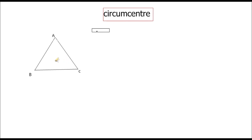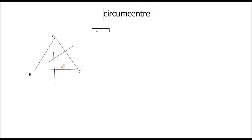Circumcenter is the point of intersection of perpendicular bisectors of the three sides. A perpendicular bisector bisects a side into two equal parts and is also perpendicular to it. For three sides we can draw three perpendicular bisectors, and all three intersect at a common point called the circumcenter of a triangle.